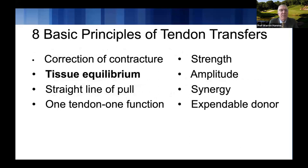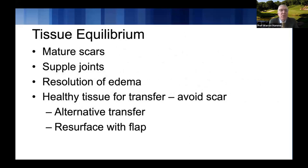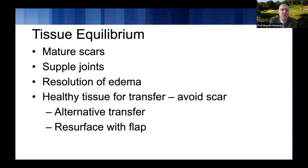Tissue equilibrium means mature scars, supple joints, resolution of edema, and healthy tissue for your transfer to pass through. You want to avoid substantial scarring. For example, in a crush injury with loss of extensor muscles along the radial forearm, a transfer such as FCR to EDC along the radial side may not be best because the tendon has to glide smoothly. You may need to think about an alternative transfer using the FCU around the ulnar side, or potentially resurfacing with a local or free flap beforehand.